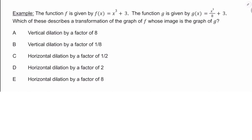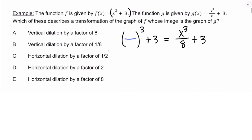This one we did in class and on the quiz, still worth doing again. If it were a vertical dilation — answer A or B — we'd see some whole number multiplied by x³ + 3. But we're seeing x³/8 + 3, so we've replaced x with something. I need to cube something to get x³/8, which means x/2 — cubing x/2 gives x³/8. So G(x) = f(x/2), which is a horizontal dilation by a factor of 2.